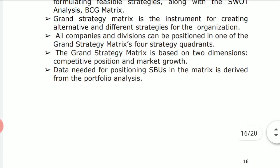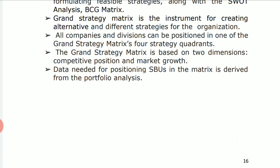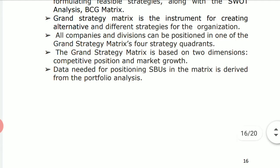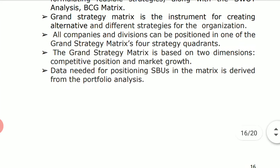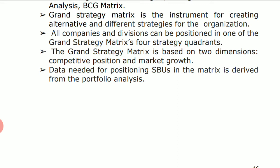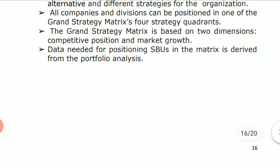Each of the four quadrants has its own specific features. If an SBU, division, or company falls in any quadrant, it can be placed there and strategies can be suggested accordingly. The Grand Strategy Matrix is based on two dimensions: the competitive position of the company and the market growth. Data needed for positioning SBUs in the matrix is derived from the portfolio analysis.